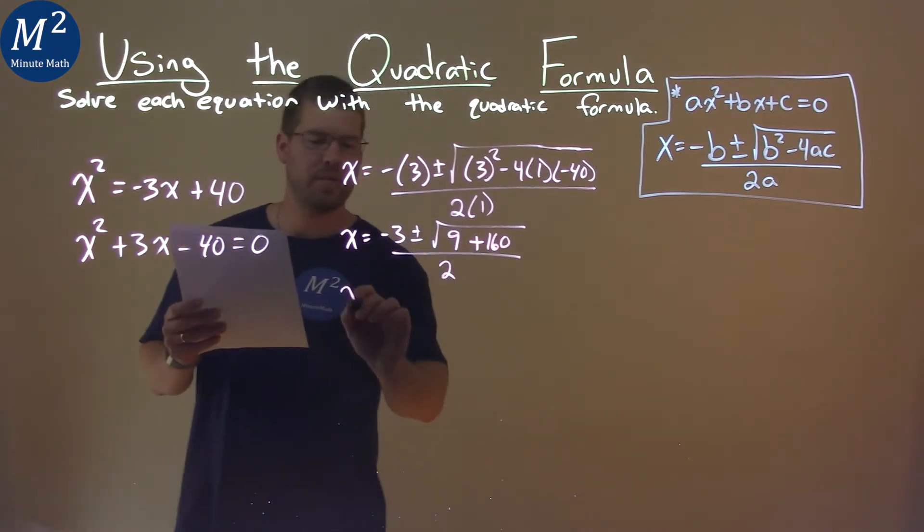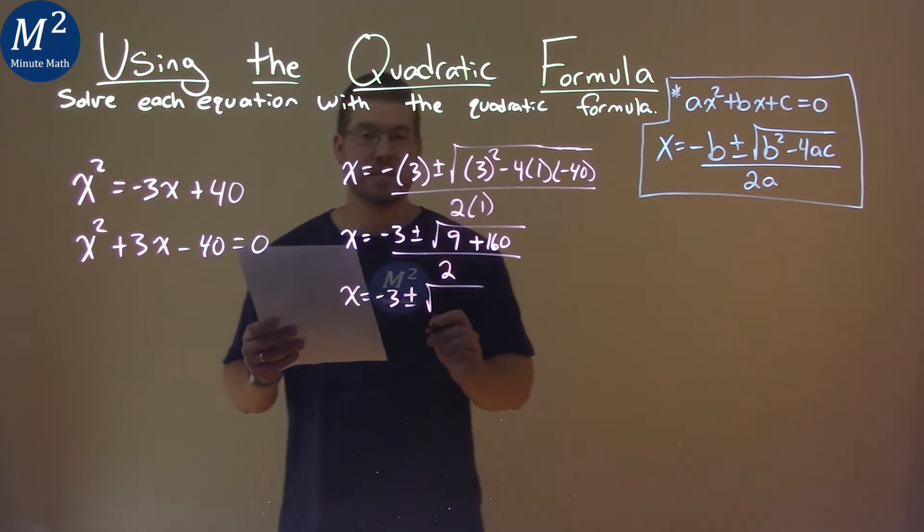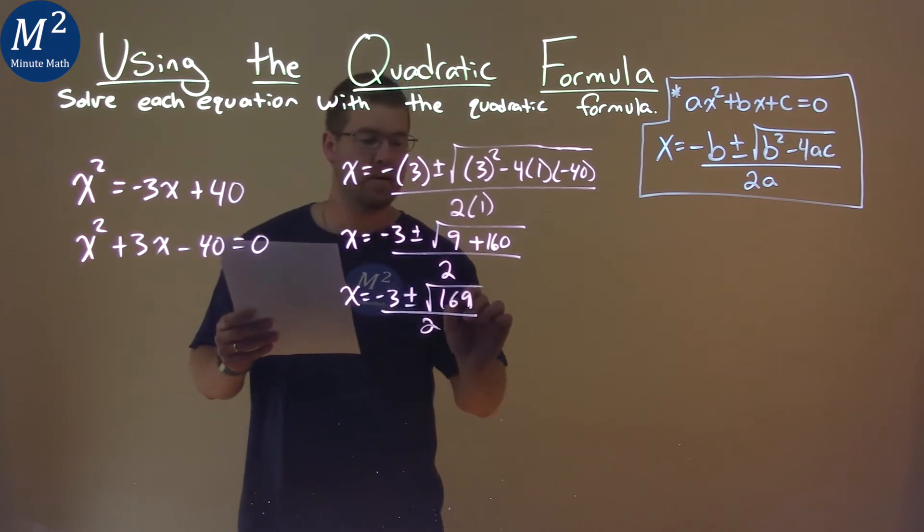All right, keep going. x equals negative 3, plus or minus. 9 plus 160 is 169, over 2.